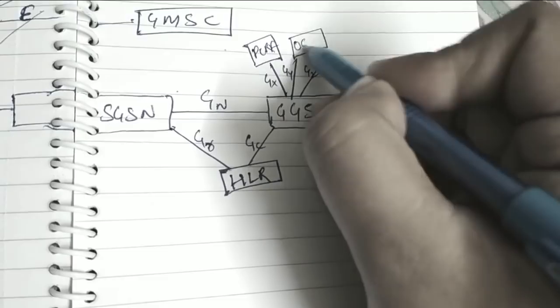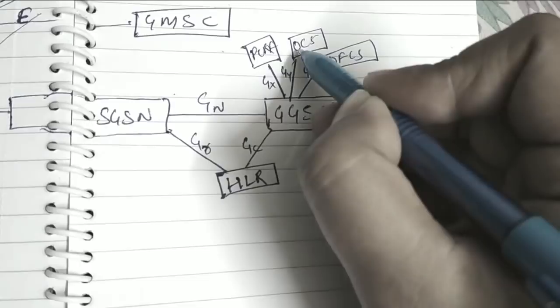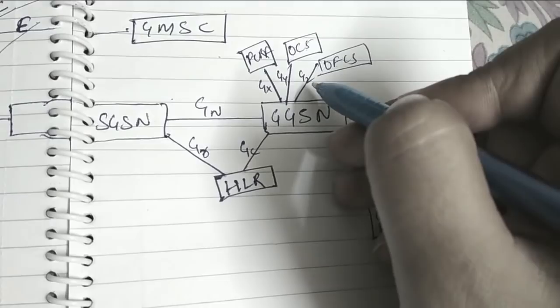Policy Control Ruling Function, Online Charging Function, Offline Charging Function. These three are the main domain for the charging purpose.